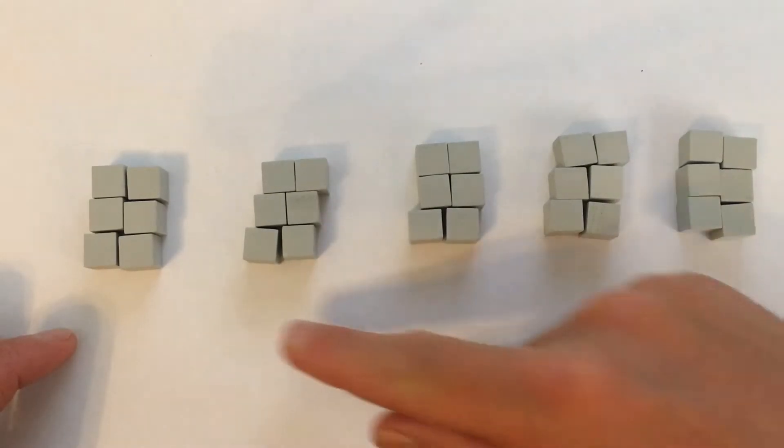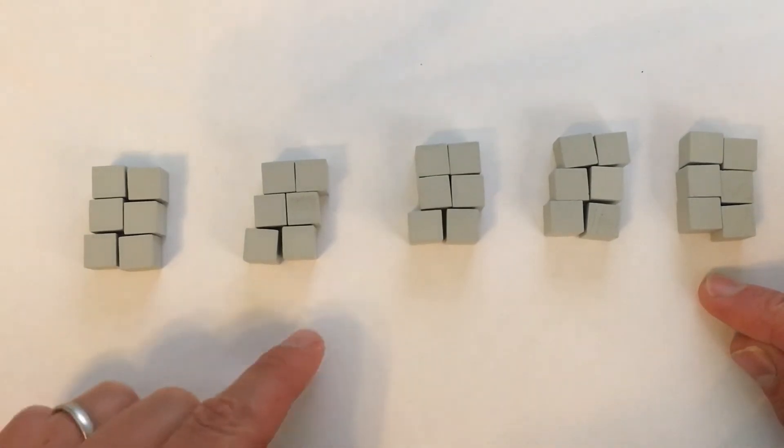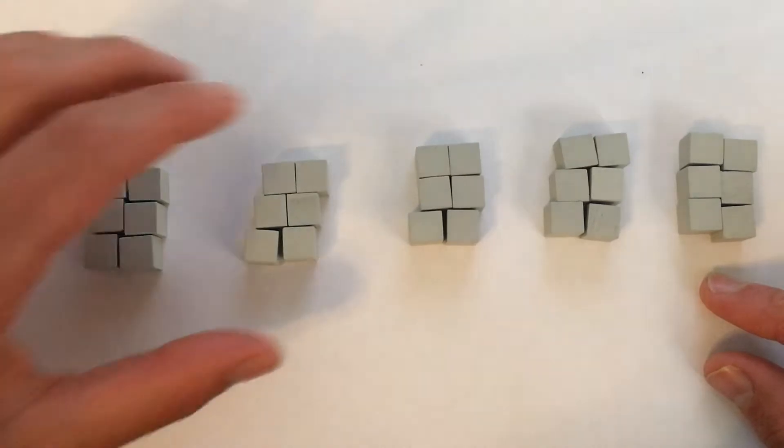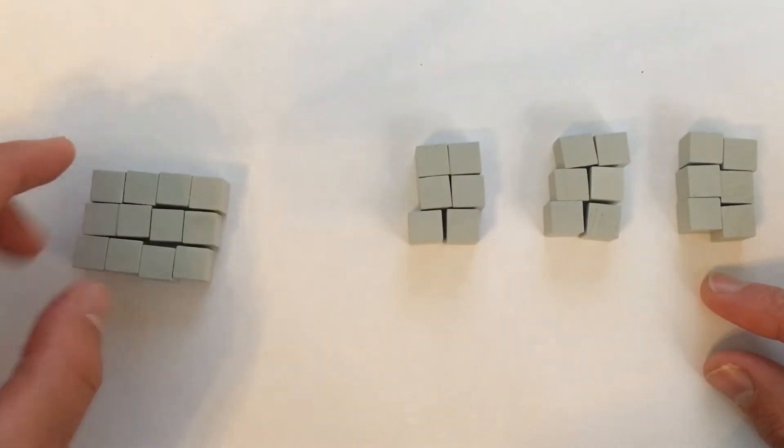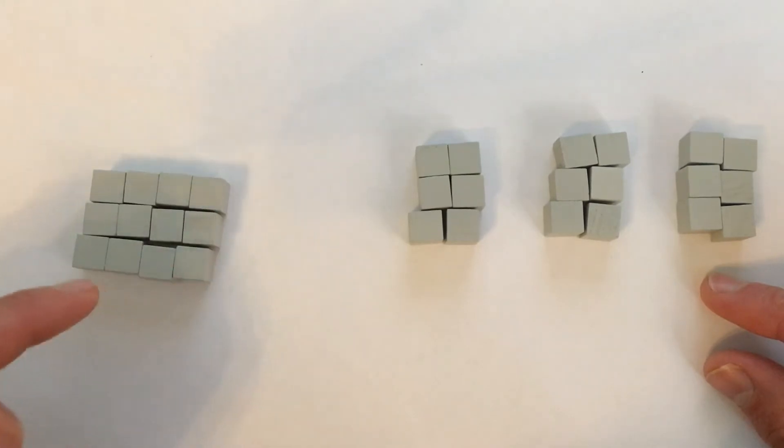Here are our 5 groups, and each group has 6 blocks in it. So 2 fifths, I take 2 of these groups together. And this now is 2 fifths of 30, because there are 30 blocks in total.